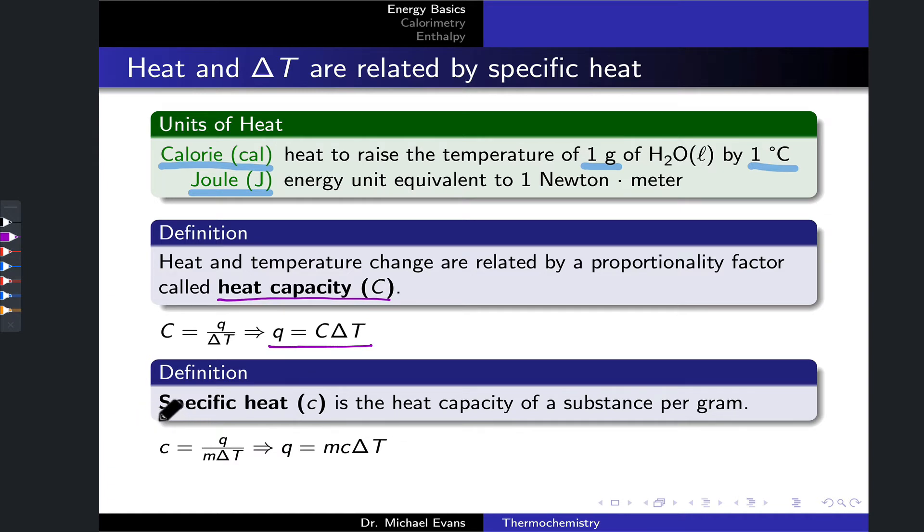Specific heat is one example of an intensive measure of heat capacity. It's the heat capacity of a substance per mass. And this word specific, by the way, comes up in a number of different places, and it means per mass. The heat capacity per gram of substance is typically how we think about this.